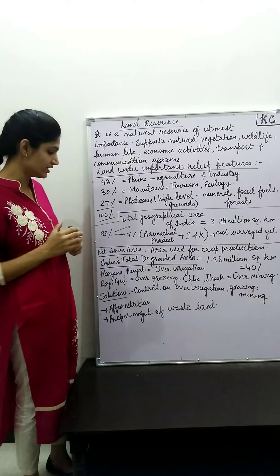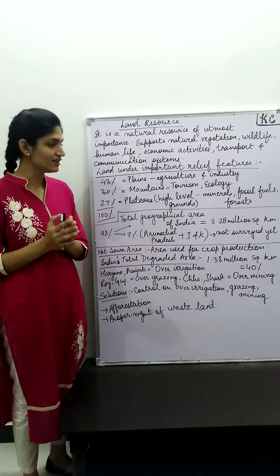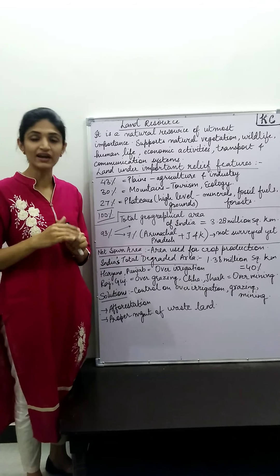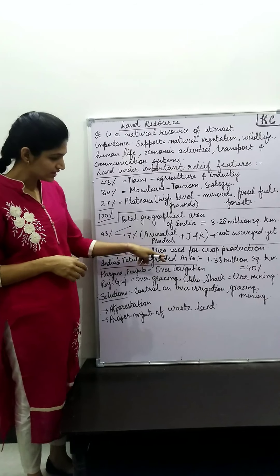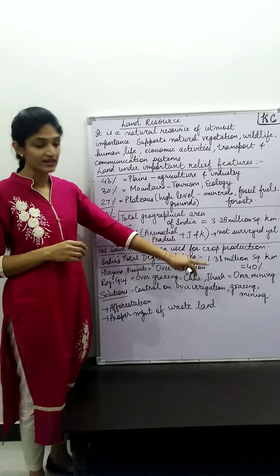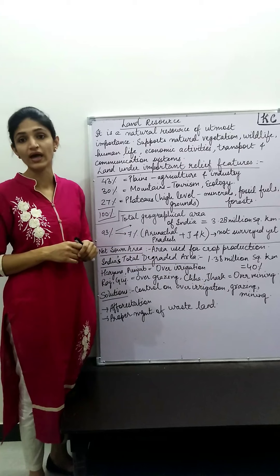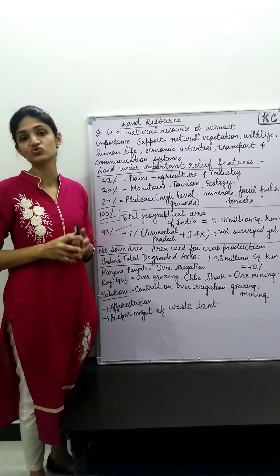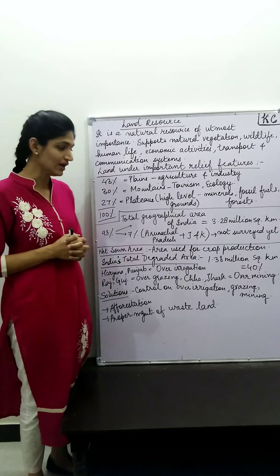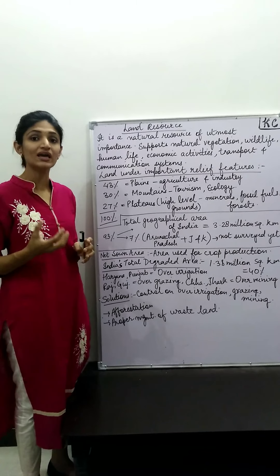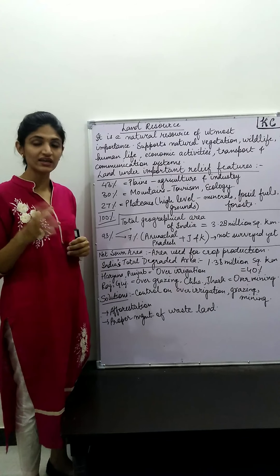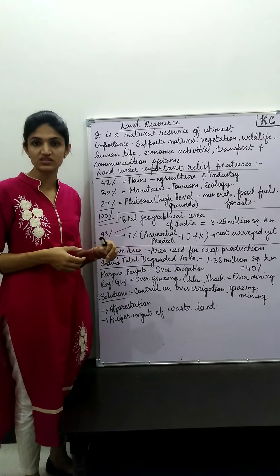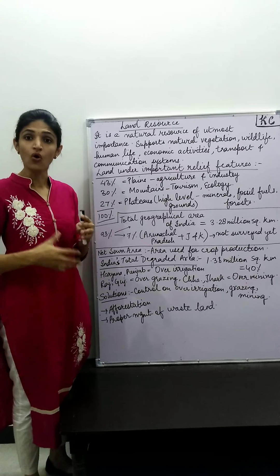Let's talk about the net sown area. The net sown area is the area used for crop production — the land that is available for agriculture where you can produce crops. In India, there are different climatic conditions, so in some states there is a lot of net sown area and in others very little. For example, Haryana and Punjab have a net sown area of 80%, while eastern states like Arunachal Pradesh have less than 10%. So the net sown area is unevenly distributed in India.